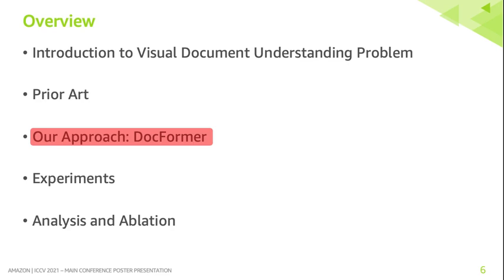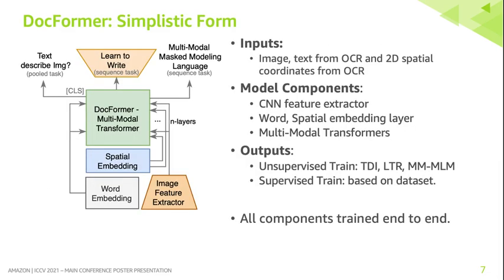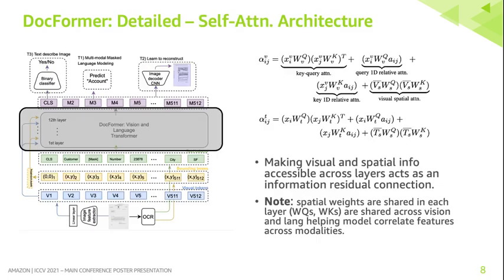Let's take a deeper look at Docformer's approach. Docformer follows the common pattern of unsupervised learning followed by supervised fine-tuning on downstream tasks. We make contributions both in the transformer architecture and pre-training tasks. In our multimodal self-attention formulation, in each layer, vision denoted by alpha V and text alpha T self-attend independently. Making visual and spatial information accessible across layers acts as an information residual bottleneck, thereby aiding in superior feature representation.